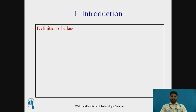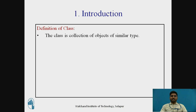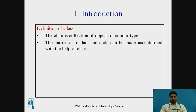Introduction — Definition of a class: the class is a collection of objects of similar type. The entire set of data and code can be made user-defined with the help of a class.